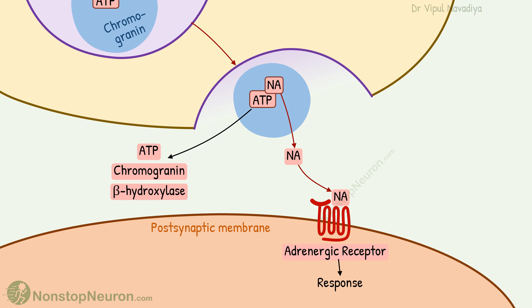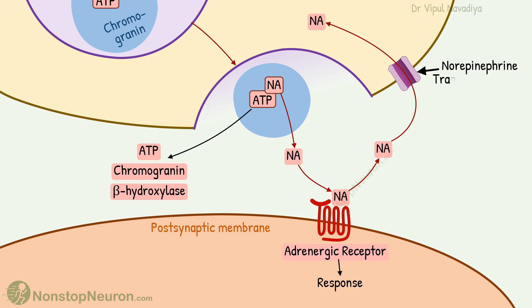Now let's see how the effect of noradrenaline is terminated. The main mechanism is re-uptake into the nerve terminal, which occurs via a norepinephrine transporter on the neuronal membrane. In this way, 75 to 90 percent of the noradrenaline is taken back up.